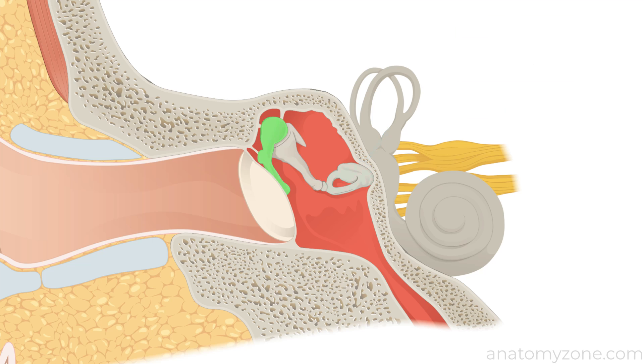The malleus derives its name from its hammer shape and it's the first bone in the ossicular chain which attaches to the inner surface of the tympanic membrane.